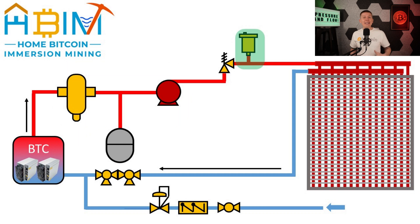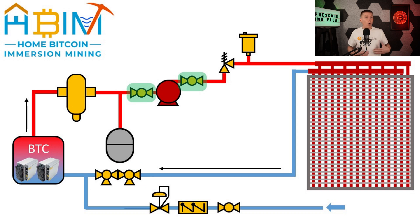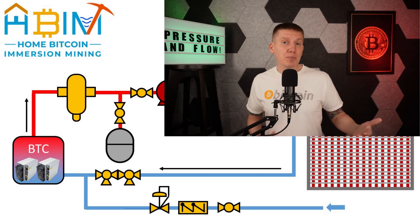An air vent should be located at any high point in the fluid loop to help entrapped air escape. When it comes to other valves, these can be added anywhere where it makes sense. Filling and draining valves are a good idea to make it easy to get fluid in and out of the system. Putting valves before and after the pump is also a good idea so you can easily service or replace the pump. And adding valves before and after major components can also be helpful to isolate them if you have to drain other parts of the system.